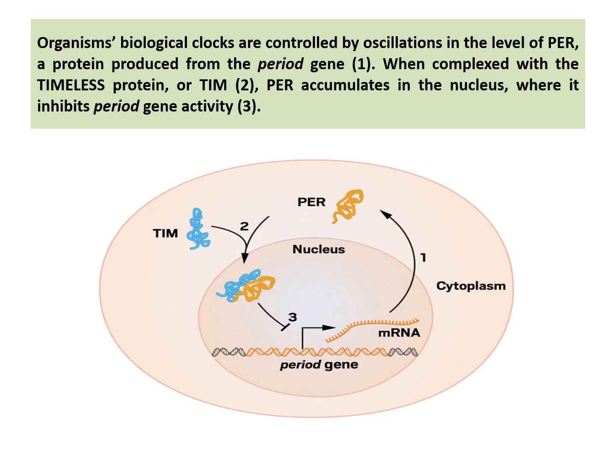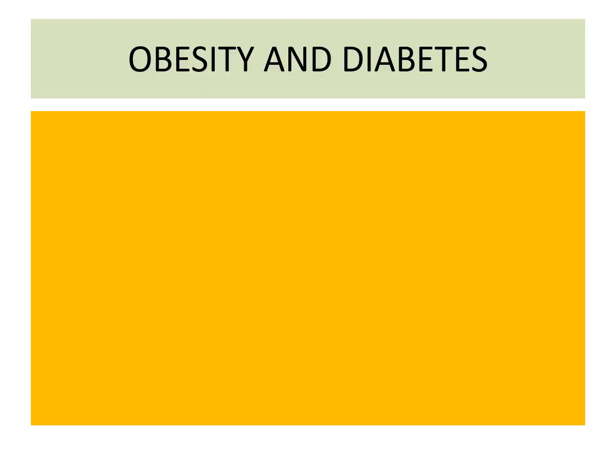The organism's biological clock is regulated by the PER protein, which is produced by the period gene when complexed with TIM — the timeless protein. PER accumulates in the nucleus where it inhibits the activity of the period gene. In this way, the circadian rhythm works at the molecular level.